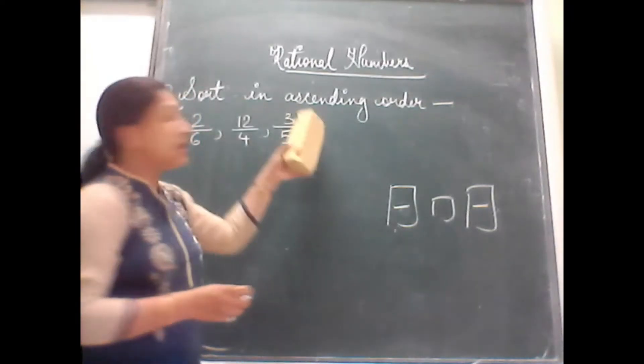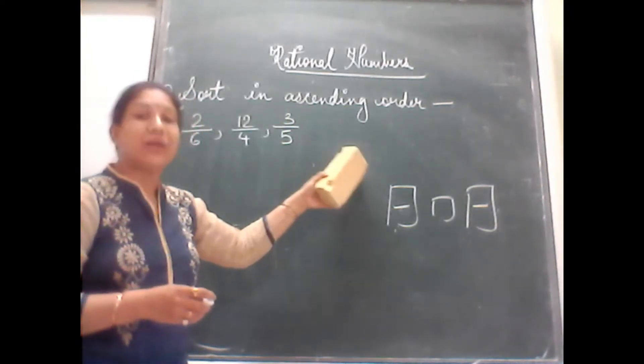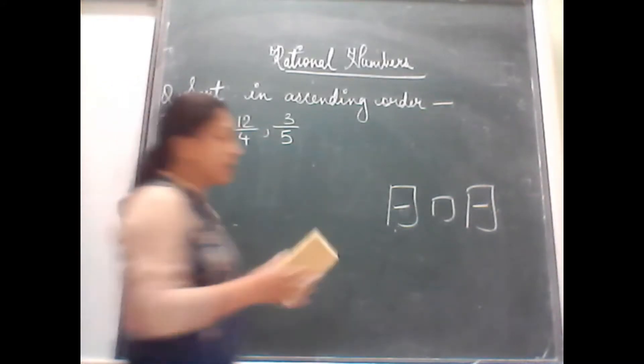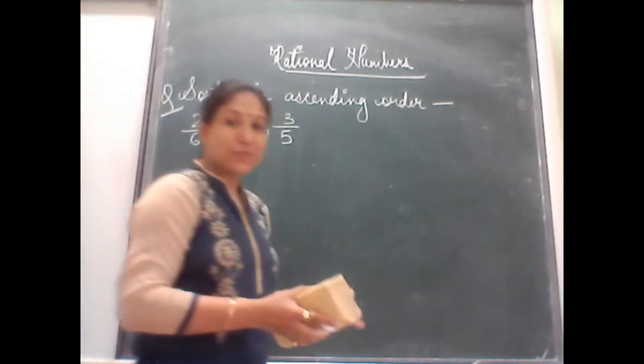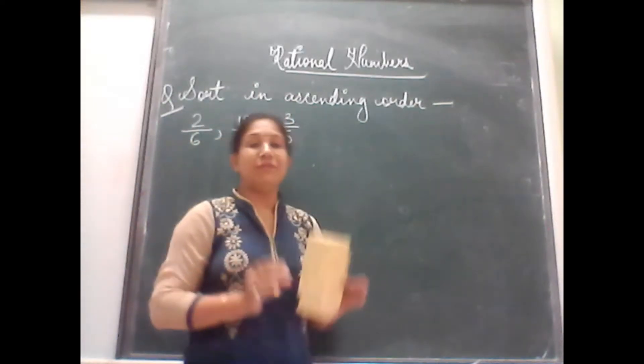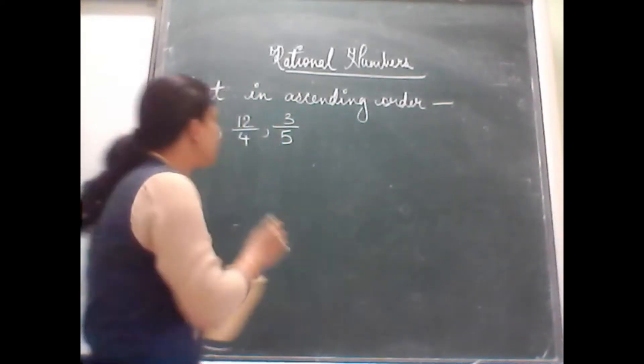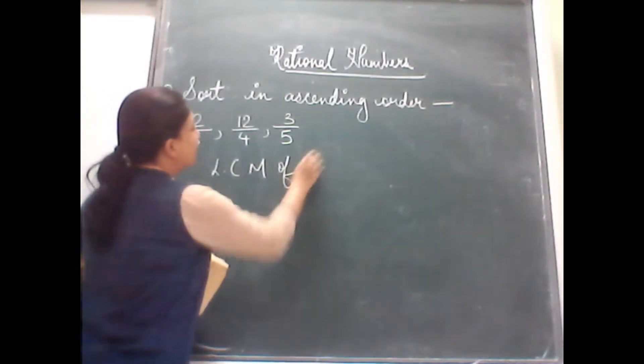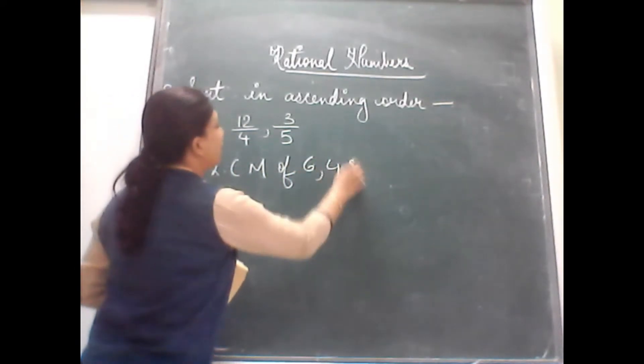So this time also, ascending order also means comparison. The comparison is between three numbers, it can be between four numbers and many more. So the method will be same. The first step will be, we will find the LCM of the denominator 6, 4 and 5.